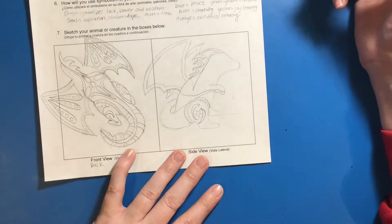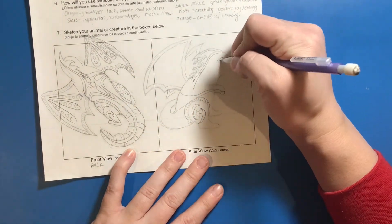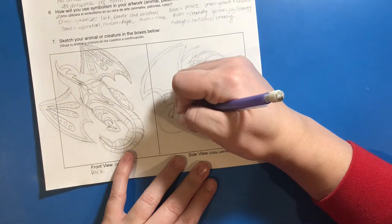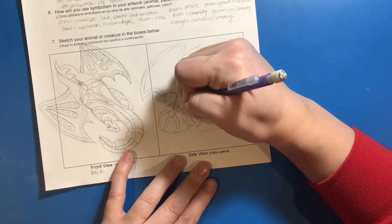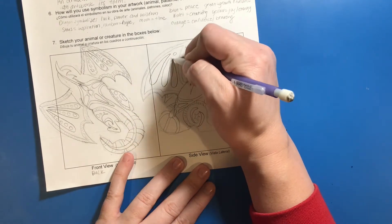You can see that I've added some concentric shapes into the spikes on the back of the head. And I try to repeat my patterns throughout in order to create a sense of unity to help make it feel like my different pieces or different designs all belong to the same creature.